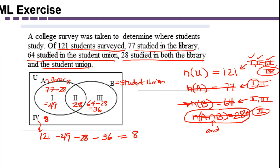In some problems, this will be the end of the exercise. All we'll ask you to do is to determine the cardinality of each region, and you would say region 1 has 49, region 2 has 28, region 3 has 36, and region 4 has 8.